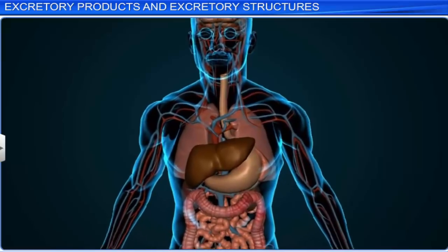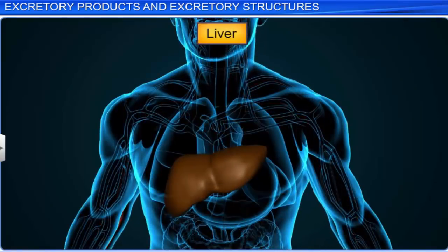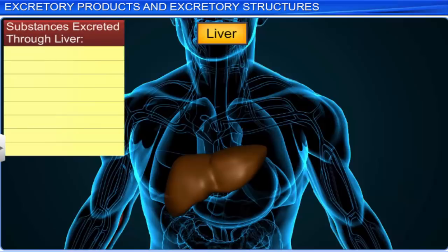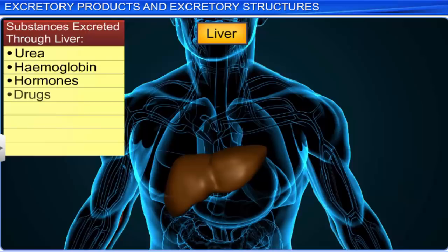Another organ that plays an important role in excretion is the liver, the largest gland in our body. It breaks down drugs and reduces their toxicity by drug metabolism. It also detoxifies ammonia and converts it into urea, which is eliminated by the kidneys. Moreover, it degrades hemoglobin, hormones, drugs, and vitamins, and adds them to bile as bile pigments bilirubin and biliverdin, which are then excreted through the feces.